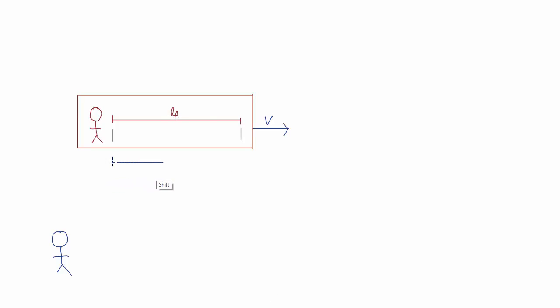Now I'm going to make a crazy assumption. Perhaps when Bob measures the length of the light clock, he might get a different value, which we'll call LB. Now, what are TA and TB — the times Alice and Bob measure for a round trip tick of the light clock?